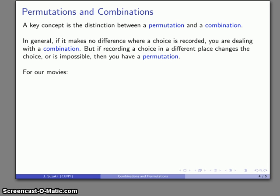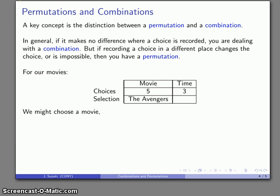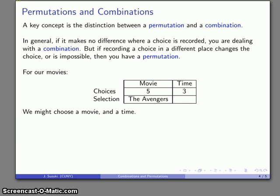For example, let's consider our movies and showtimes. I had my choice of five movies, my choice of three times, and I might choose a movie, The Avengers for example, and I might choose a time, 7:30 p.m. for example. Here's the important thing: